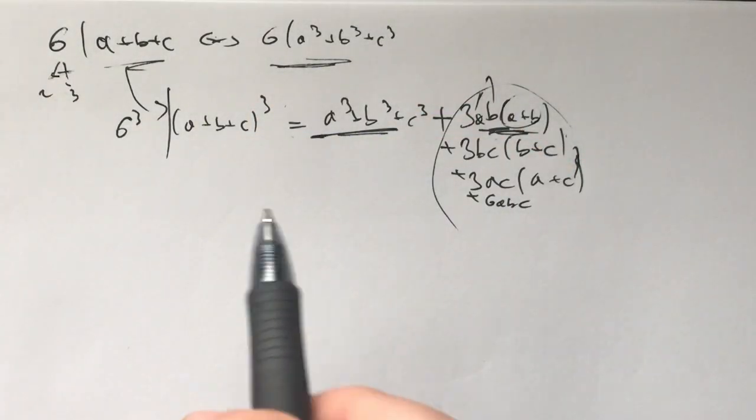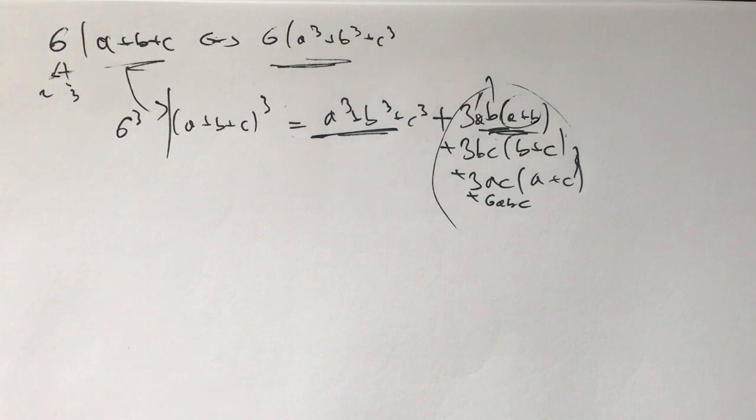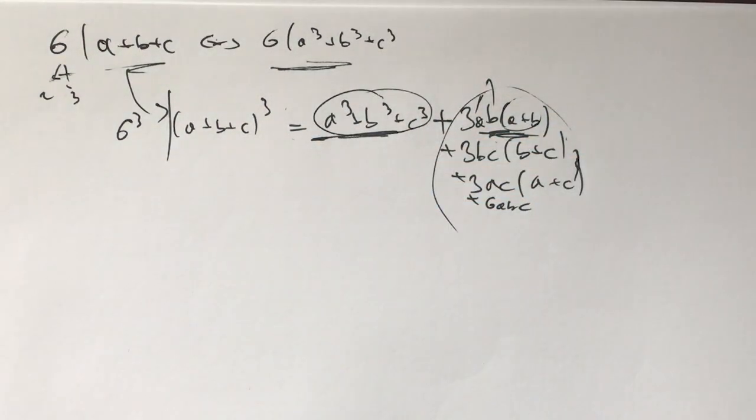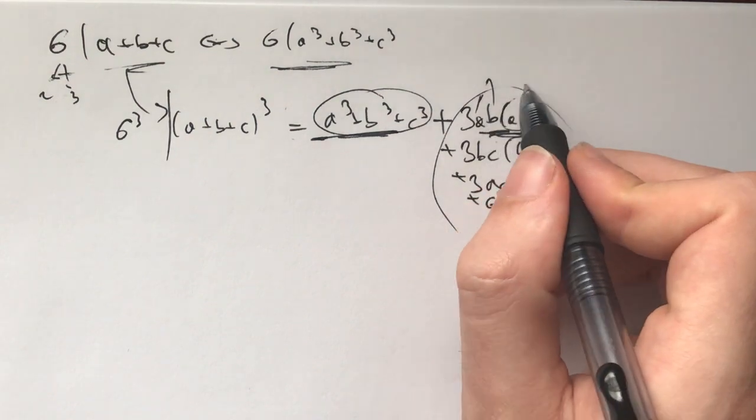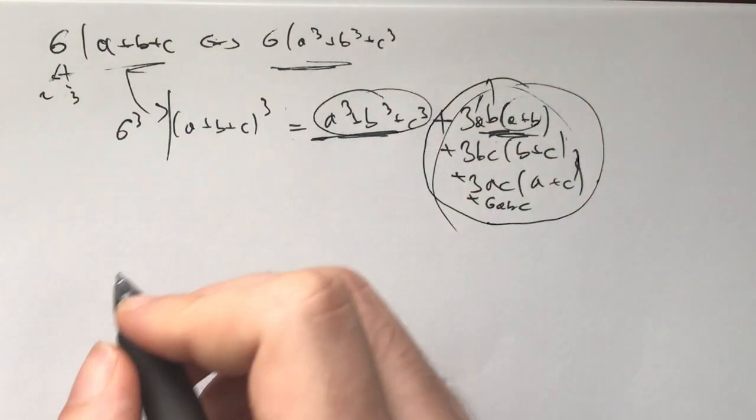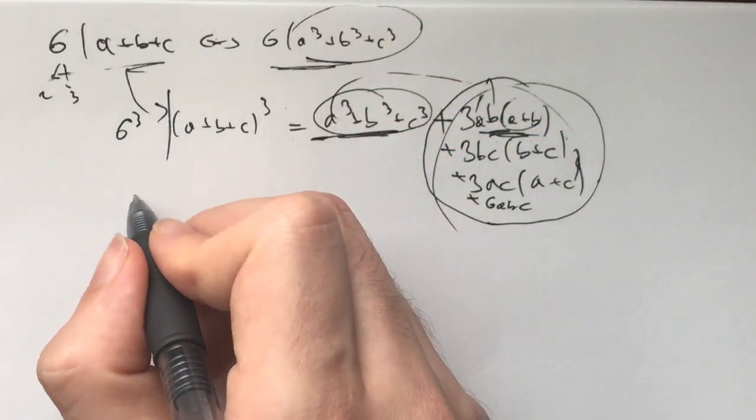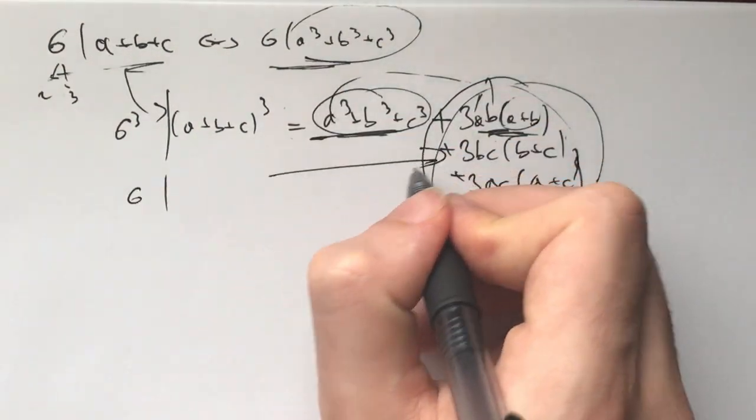Now, the converse, you could look at, okay, if 6 divides this number right here, well, then it divides this whole thing. And then it divides, like when you sum this, if 6 divides this, we know 6 divides this thing right here.